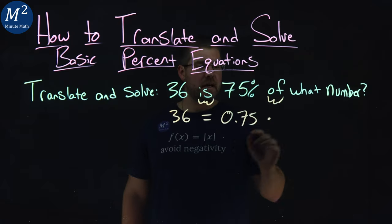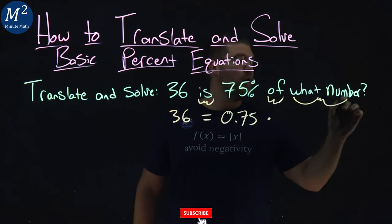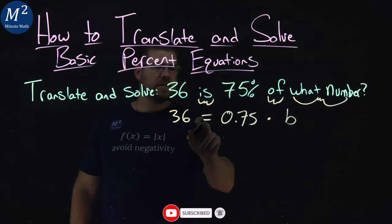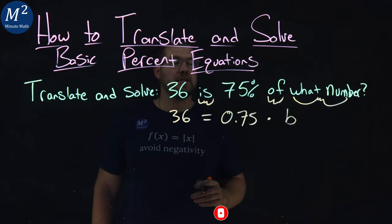and one letter I want to use is here, b, and our what number? We don't know what that is, so let's give it a variable, b. So 36 equals 0.75 times b.